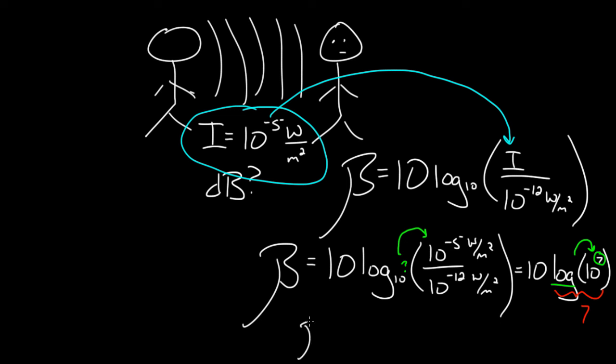So my final answer, beta, the loudness, the number of decibels is going to be 10 times log of 10 to the seventh was just 7, because I had to raise 10 to the seventh to get 10 to the seventh. So 10 times 7 equals 70. I'm yelling at 70 decibels. I need to calm down. My friend's going to start getting mad at me. That's how you figure out how loud the sound wave is.